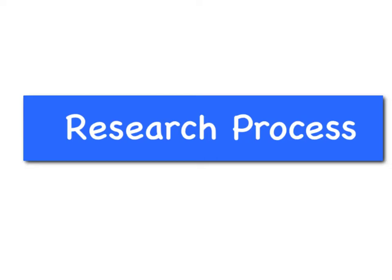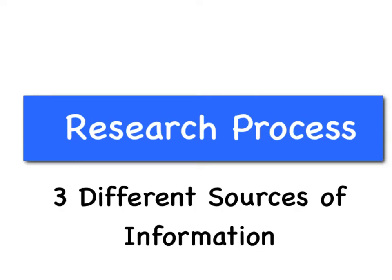The research process is the most important element of your persuasive writing or public speaking project, because the research process will help you determine what your three arguments will be. It's important to note for this project that you're going to need three different sources of information, minimum. You can have more, but in your Works Cited page, I should definitely see three different sources.